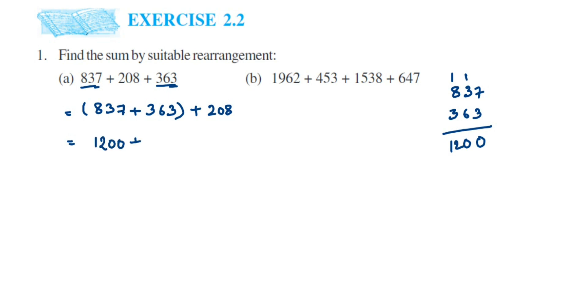So 1200 plus this 208. Now we have to just add 208 to it. This is easy addition, we'll get 1408. So this is equal to 1408, that's it. So how we have to arrange it? We have to arrange in such a way that we'll get zeros when you add it, because numbers with zero endings are easy to add.